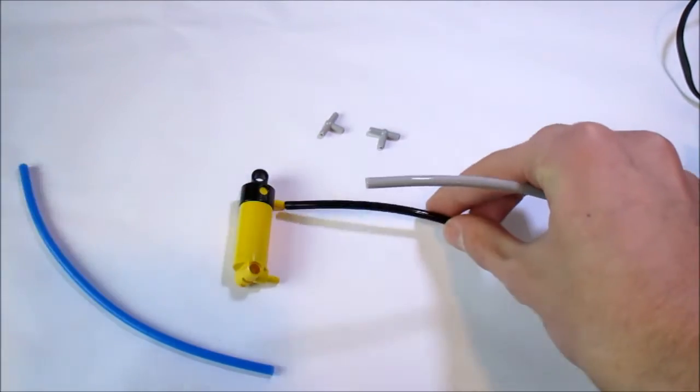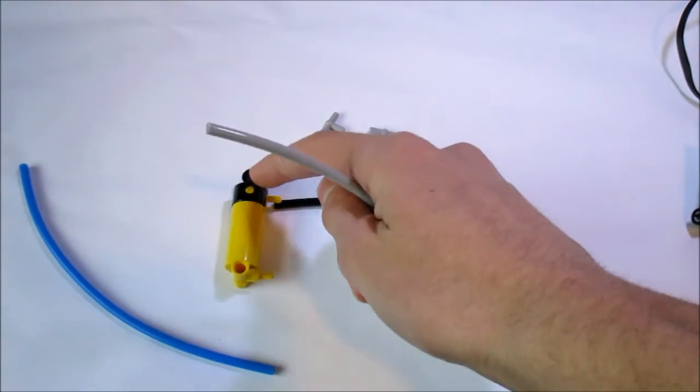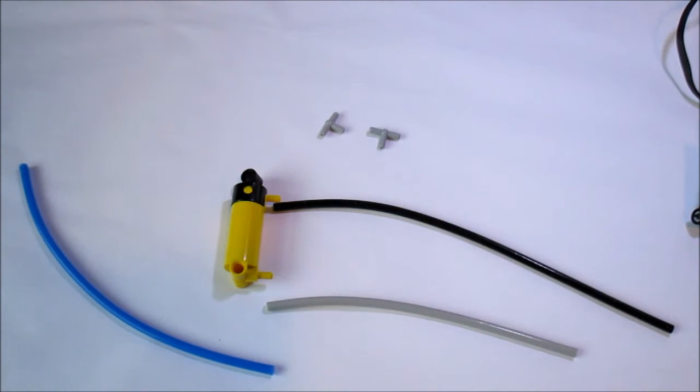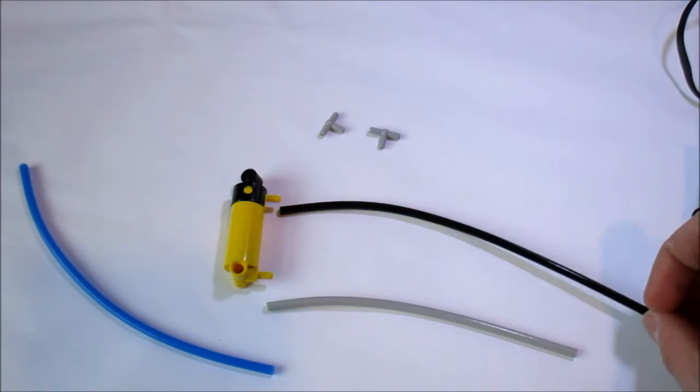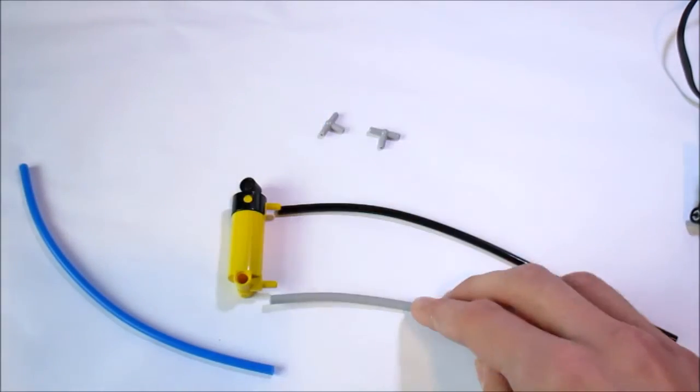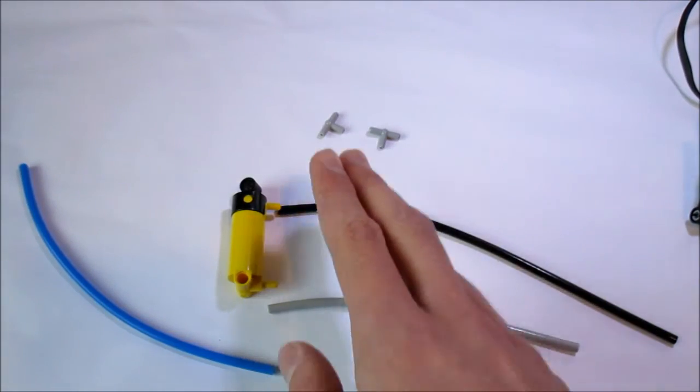Use the black tubes to go into the black end of the piston and the gray tubes go into the yellow end of the piston. And the reason for this is you know that the black tubes are always going to make your pistons retract and the gray tubes always make the piston extend.